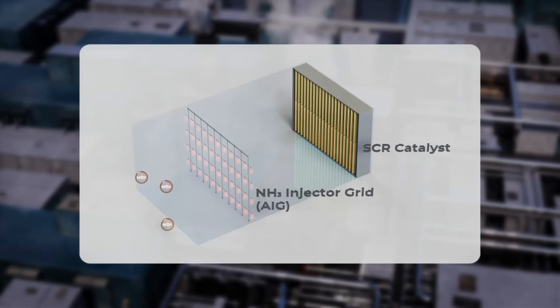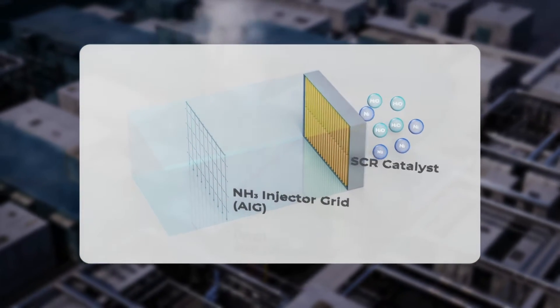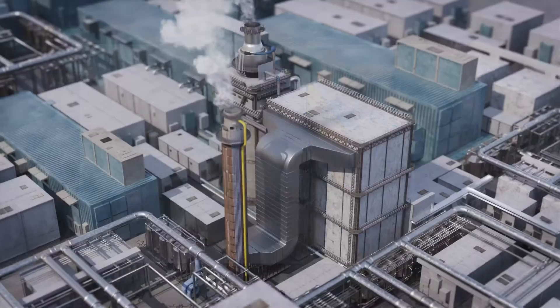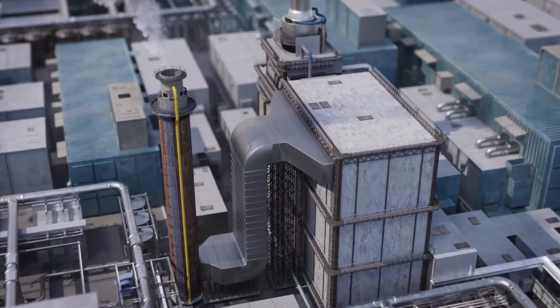SCRs function by injecting ammonia into the flue gas, which then passes through a catalyst module. This catalyst has fine pores that the flue gas and ammonia mixture must pass through before exiting the system for the reaction to occur.